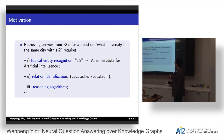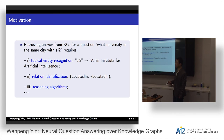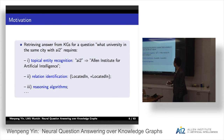To answer questions over a knowledge graph, for a question like 'what university is in the same city with AI2?' it requires, first, topic entity recognition like AI2 to Allen Institute for Artificial Intelligence. The second is relation identification — in this example, it should be 'located in' and inverse 'located in', where star means the inverse relationship. The third is some reasoning algorithms.